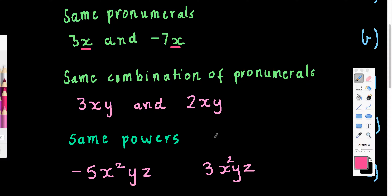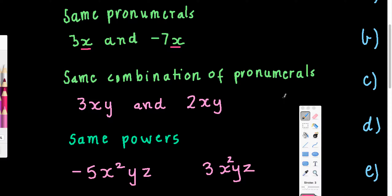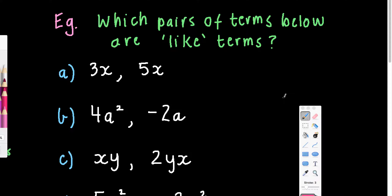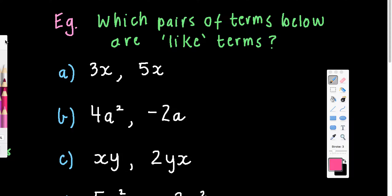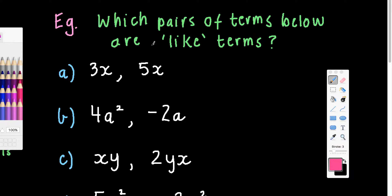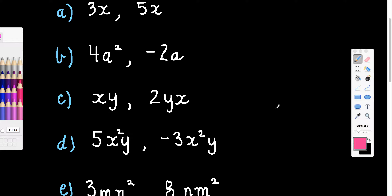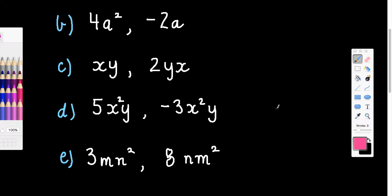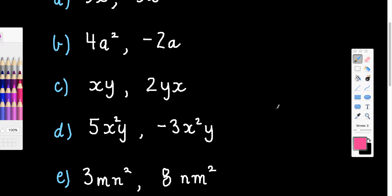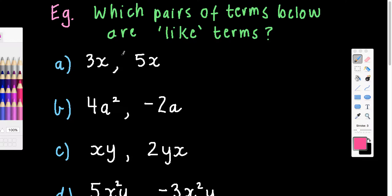Now let's try to identify some like terms — we'll say 'like' or 'unlike' for each pair. First, 3x and 5x: you might want to pause and have a try before I do them. For 3x and 5x, I've got the same pronumeral, same power of 1 — so yes, these are like terms.